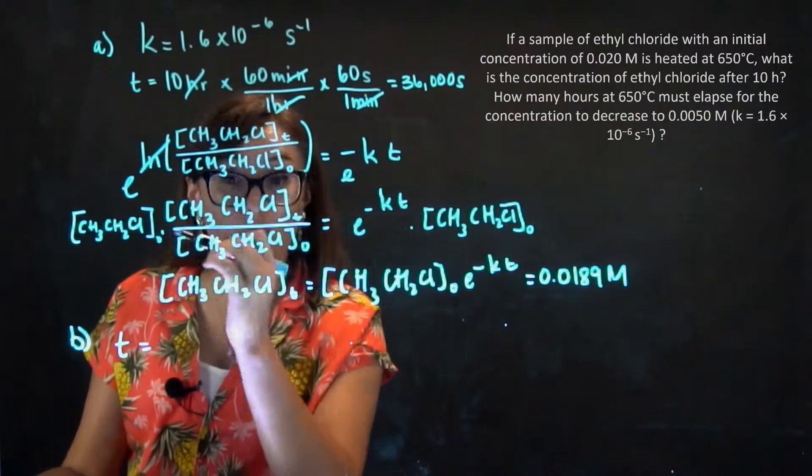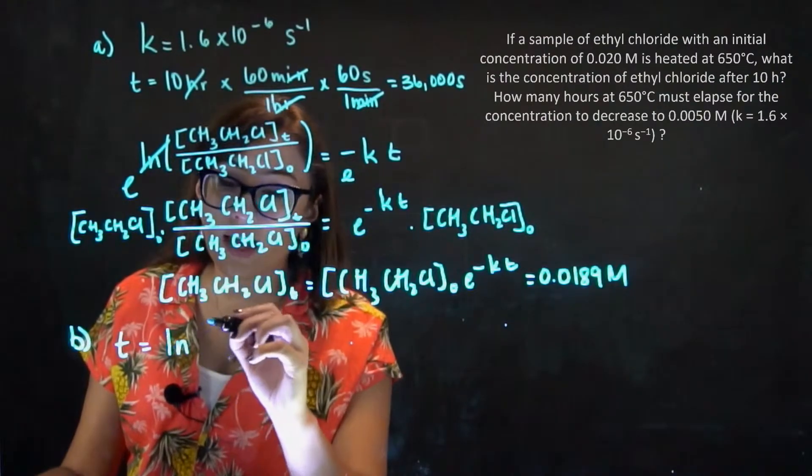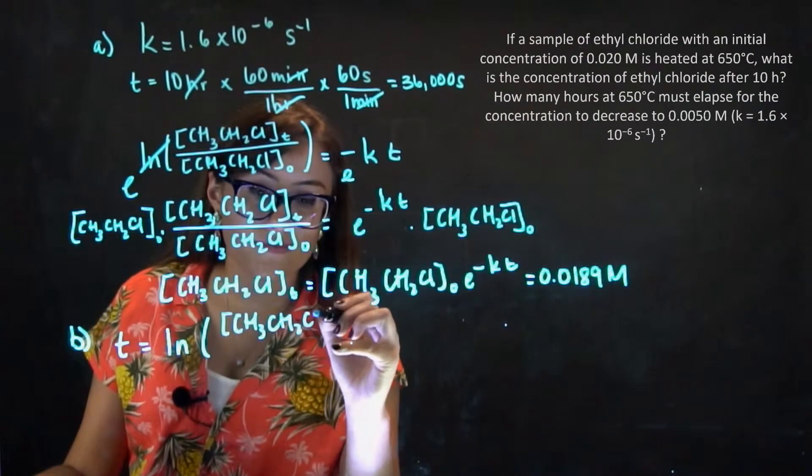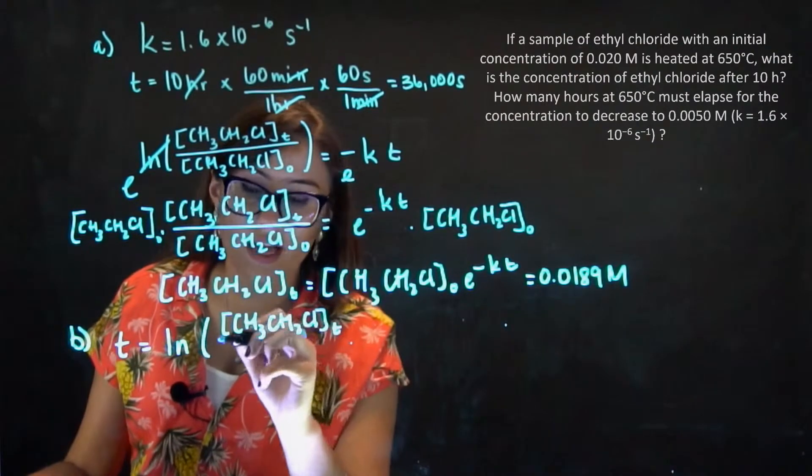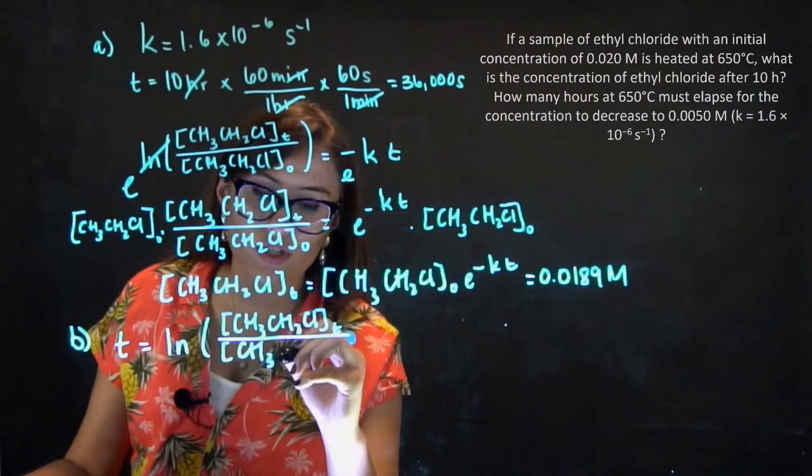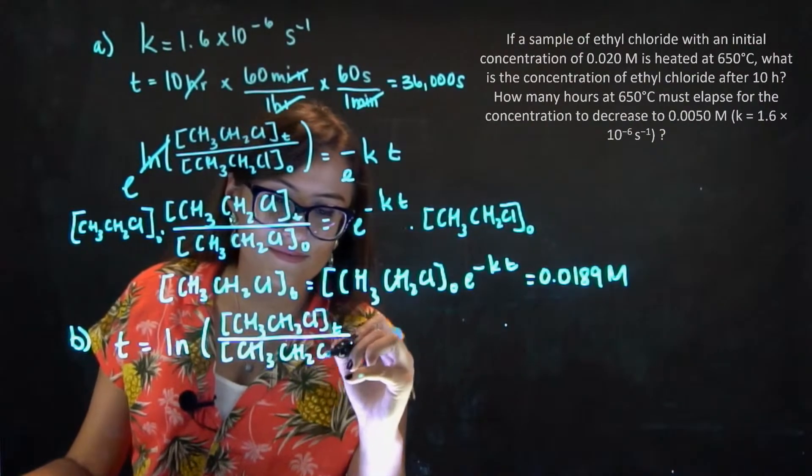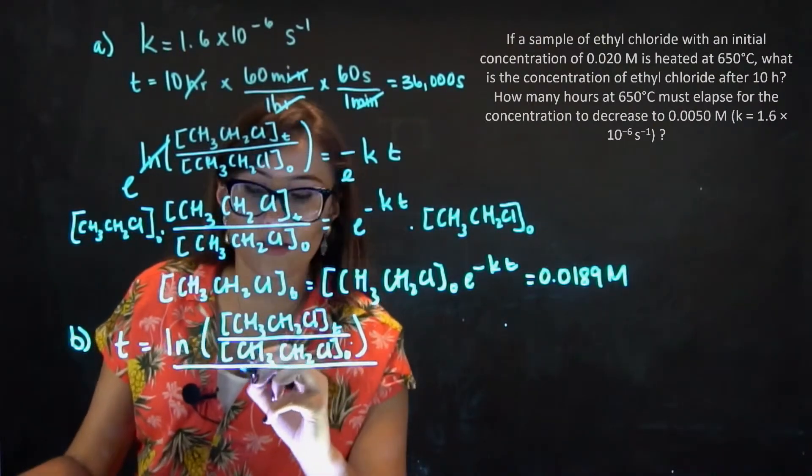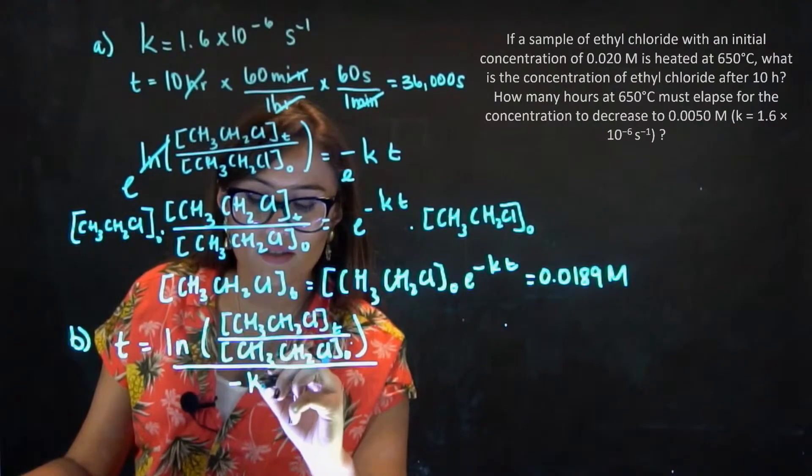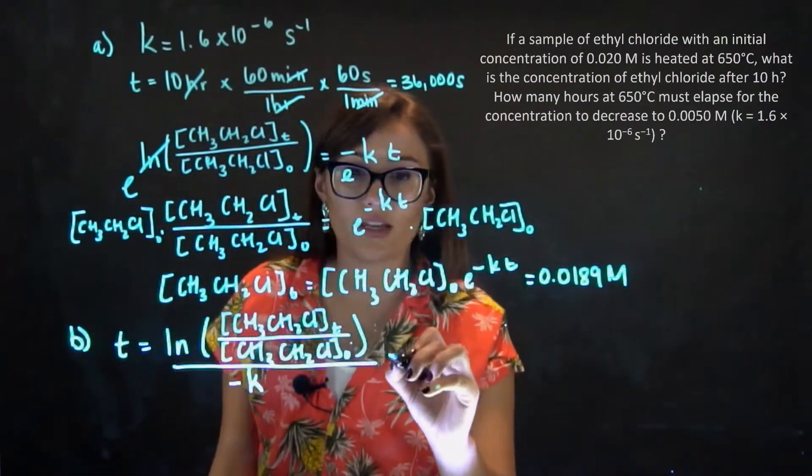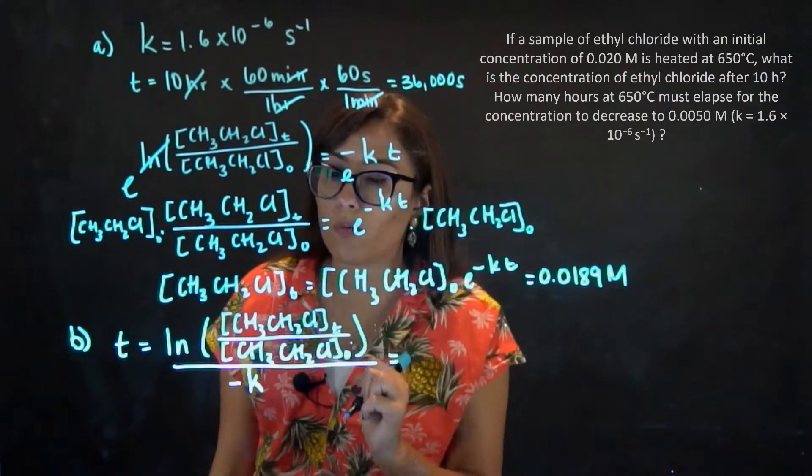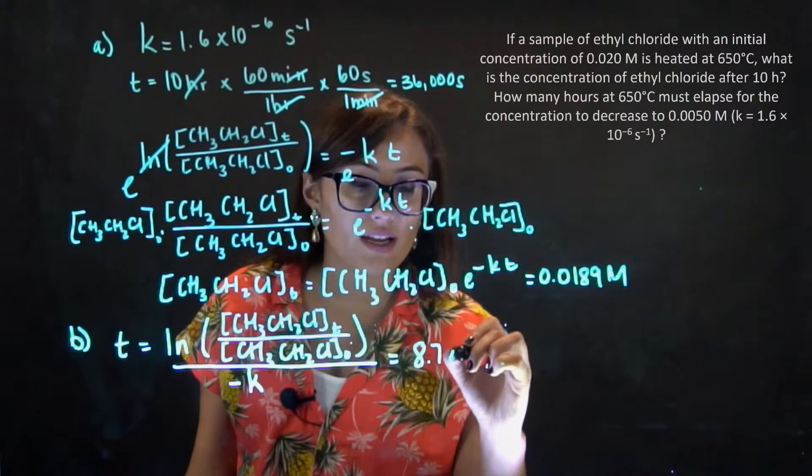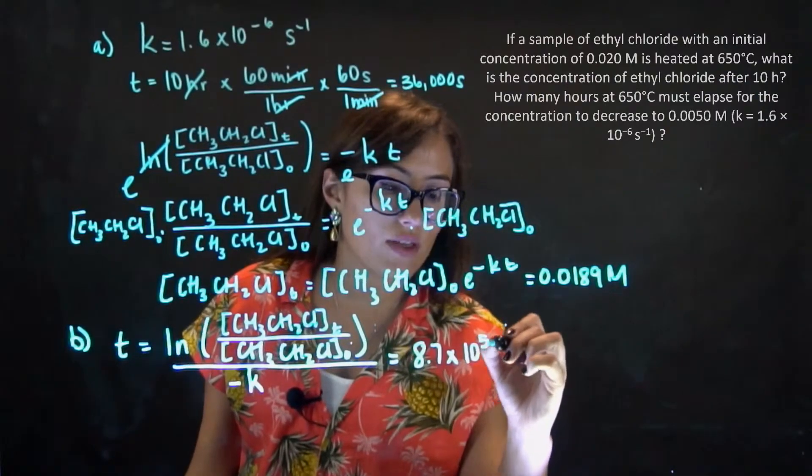So in this case, we're rearranging the equation like we did previously, where ln is equal to ethyl chloride at some time over the initial concentration, all divided by negative k, which is my rate constant. So once we plug in the appropriate values into this expression, we end up getting 8.7 times 10 to the fifth per second.